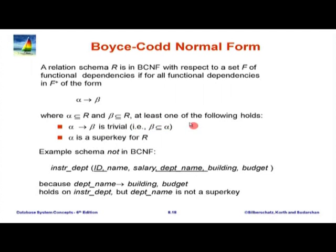So we are going to ignore the trivial ones. Among the non-trivial ones, if you have a dependency where the left-hand side is not a super key, then there is redundancy in the relation, and we do not want this to happen. So what we want is a schema where every relation satisfies this property — then there would not be redundancy.